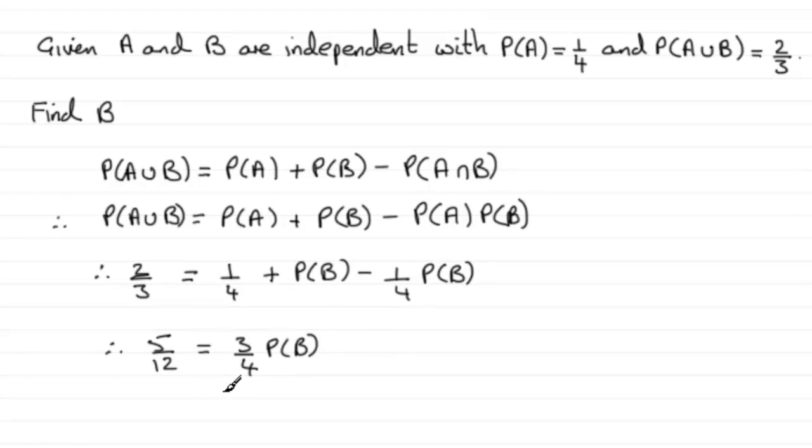And it follows from this that if we multiply both sides by four and divide by three, you end up with the probability of B equaling five twelfths multiplied by four thirds. And if you do a bit of cancelling here, or work it out in a calculator, you can see that four into four goes one, four into twelve goes three, and you end up with the probability of B equaling five over nine. So probability of B equals five ninths.